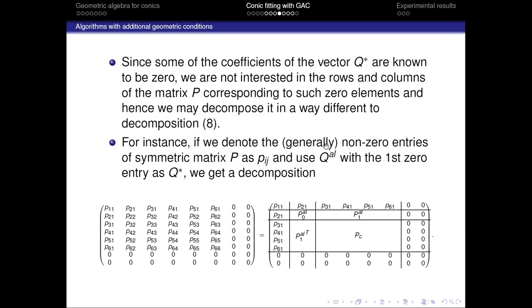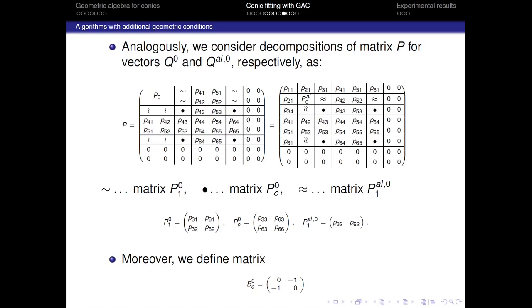So, Q star can be for example QL. So, in both the objective function and in the normalization constraint, Q is substitute for Q star. In order to reach solution in a similar way as in the original problem, we have to decompose the matrix P, but we have to do it differently. Since some of the coefficients of the vector Q star are known to be zero, we are not interested in the rows and columns of the matrix P that correspond to such zero elements and hence we will decompose it in a different way.